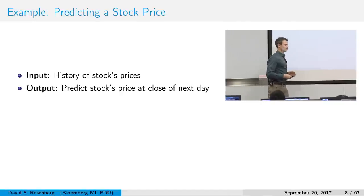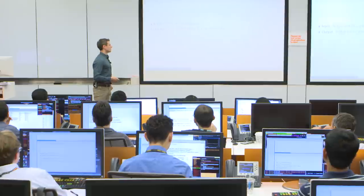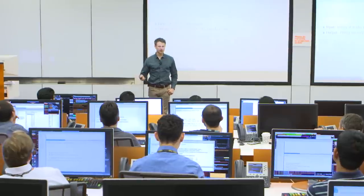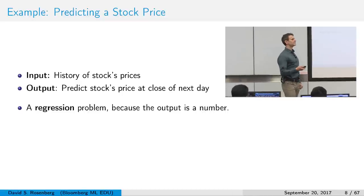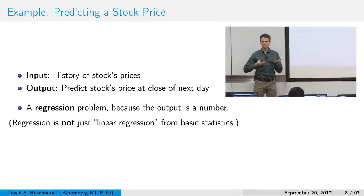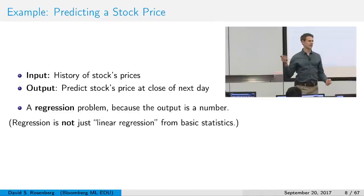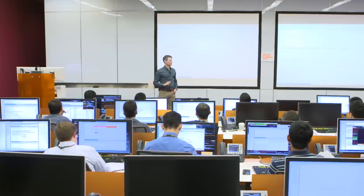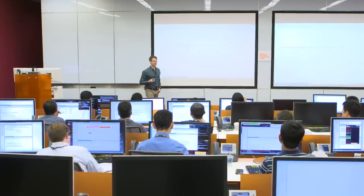Next example: predicting a stock price. You have the history of a stock price up to today and want to predict tomorrow's closing price. The key difference here is that we're predicting a number, not a class. Anytime you're predicting a number, it's called regression. Regression means predicting a number — and it goes far beyond basic linear regression from statistics class. Regression can be an arbitrarily complicated computer program deciding what number to produce given your inputs. Those are the most common types of machine learning problems.